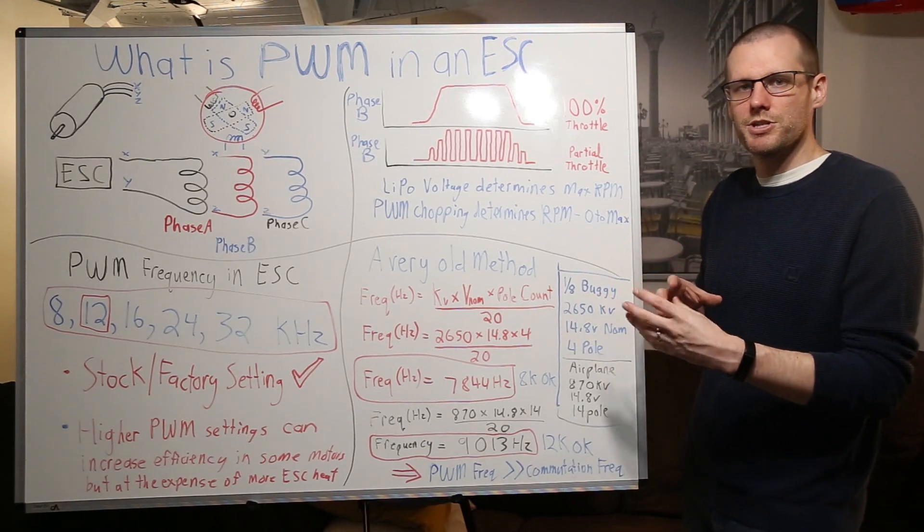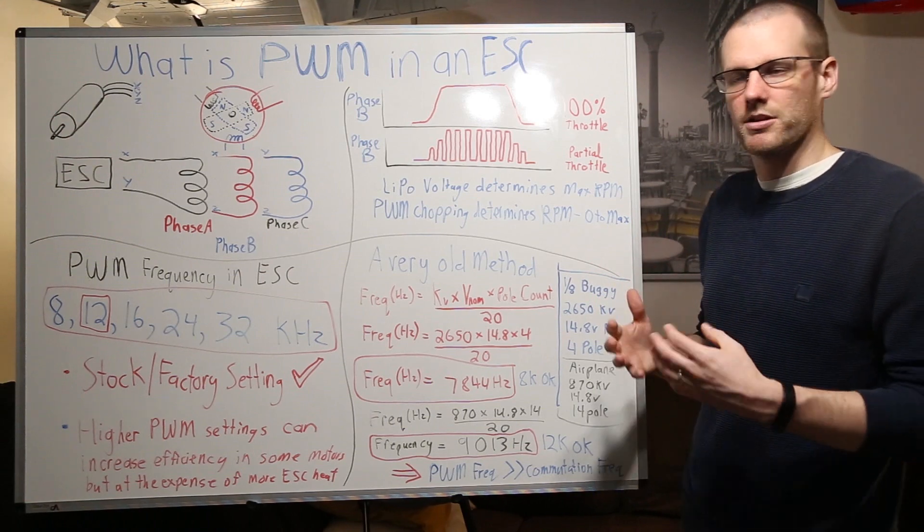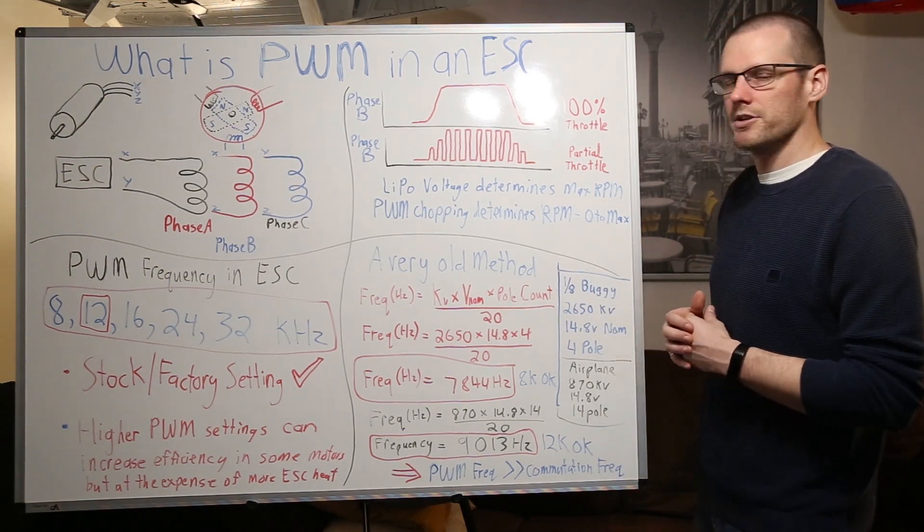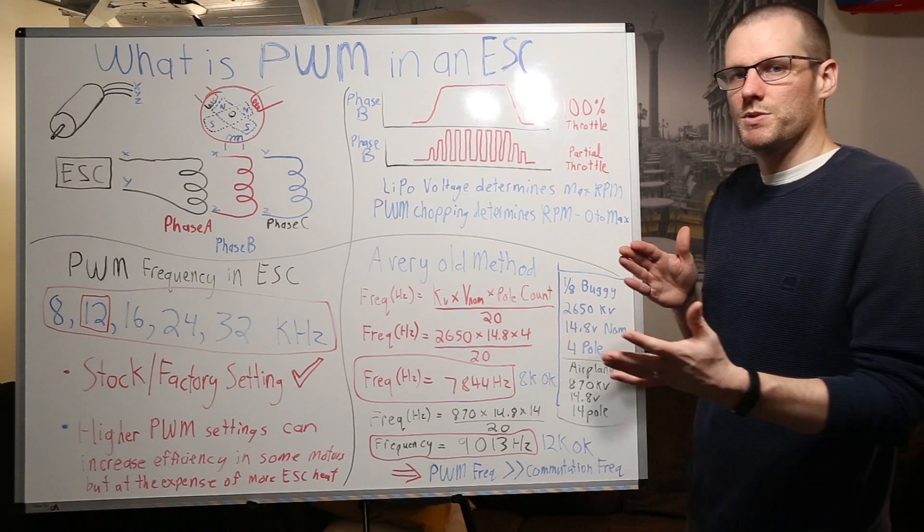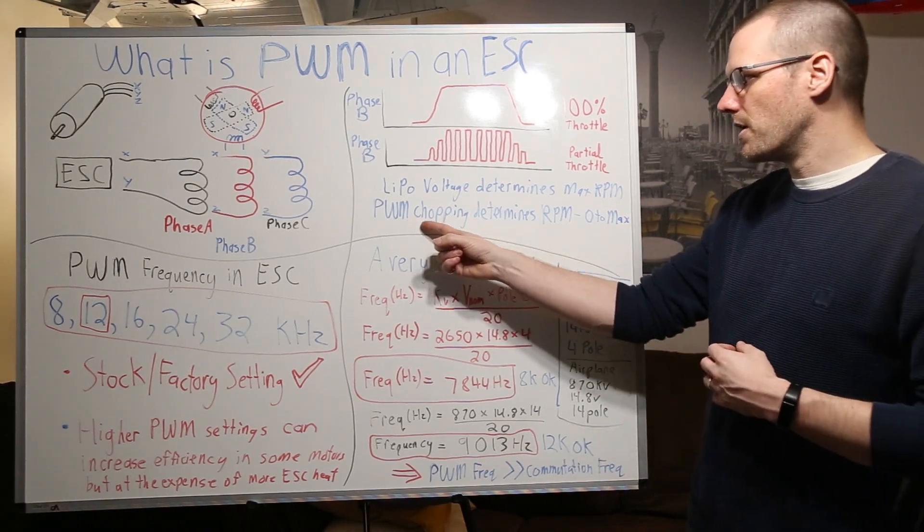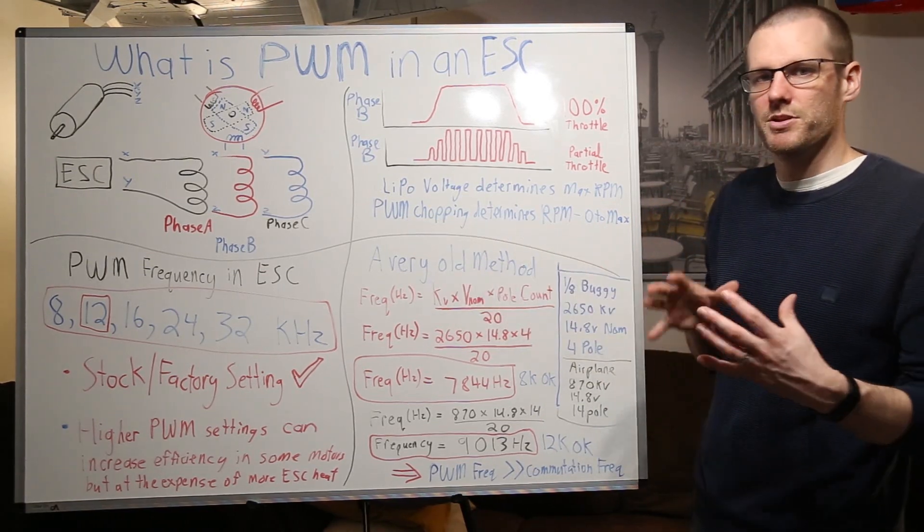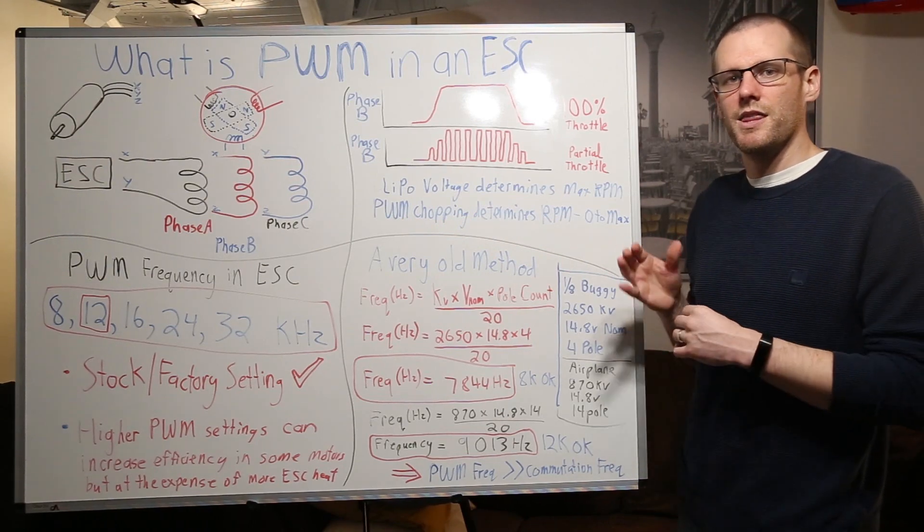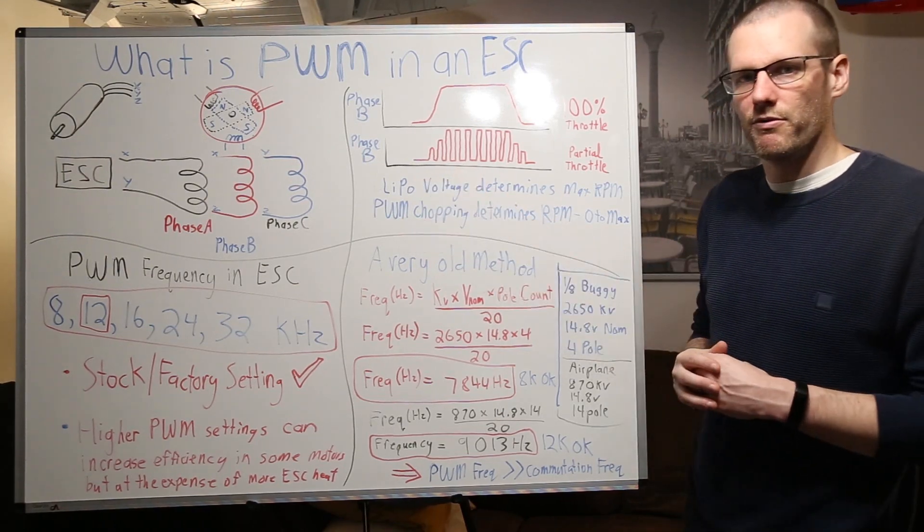Whatever that maximum voltage is that's the maximum RPM theoretically you can get out of that motor under its own power. Now what happens between that maximum and zero? Well PWM chopping determines the RPM between that zero value and the maximum based on the lipo voltage.